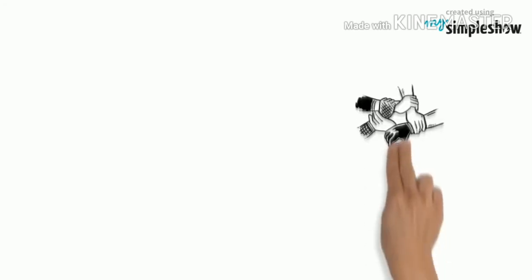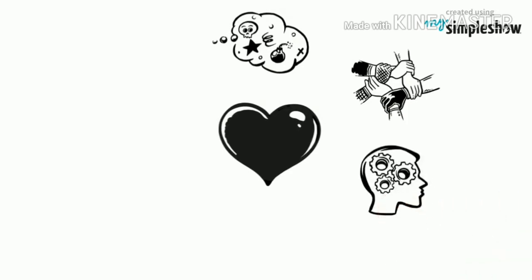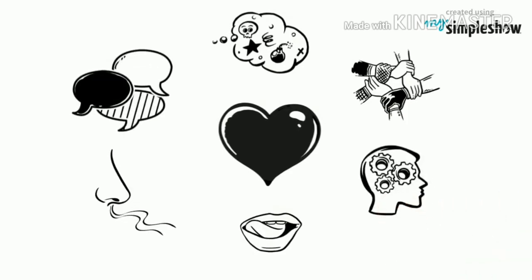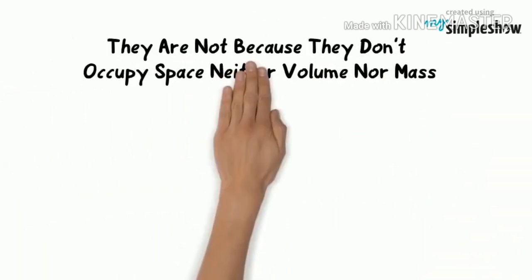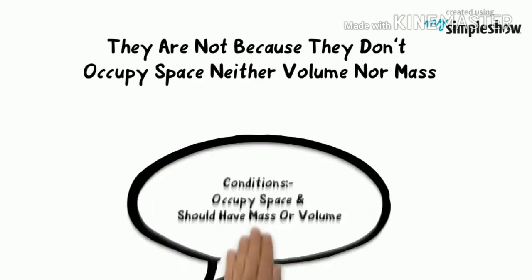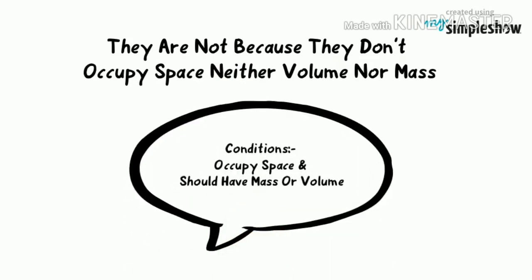Now, things like friendship, love, affection, hatred, good or bad manners, thoughts, ideas, taste, smell, etc. are not considered as matter, though all these things matter a lot in our day-to-day life. They are not matter because they don't occupy space — neither volume nor mass. The only conditions for something to be called matter is that it should occupy space and should have mass or volume.